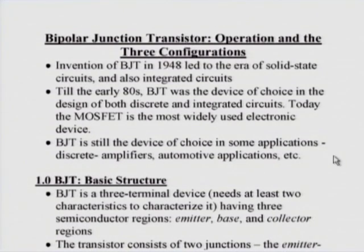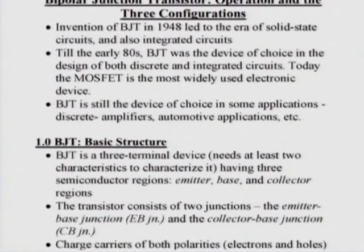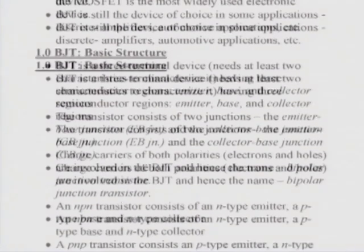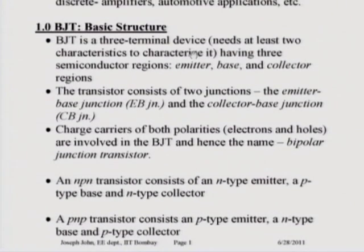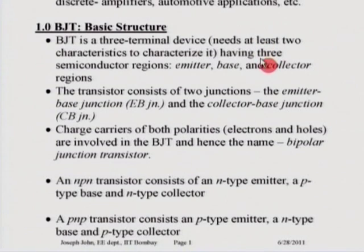Coming to the basic structure of a BJT, it is a three-terminal device, which means it needs at least two characteristics to characterize it. It has three semiconductor regions: emitter, base, and collector. The transistor has two junctions — the emitter-base junction and the collector-base junction.